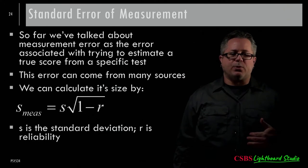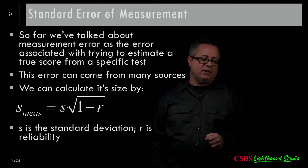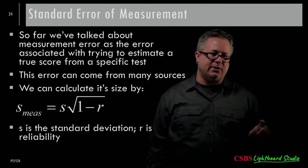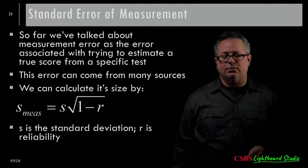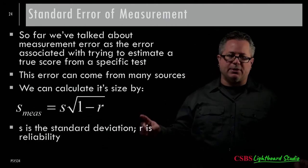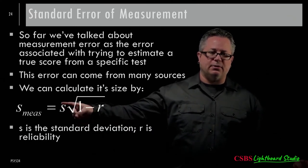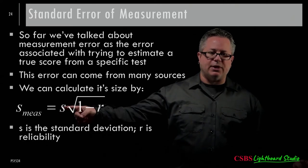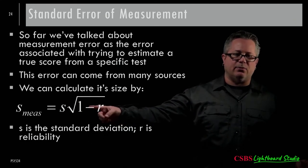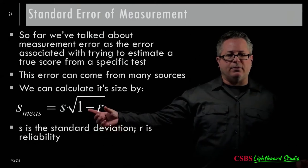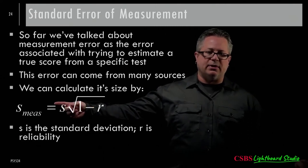We've talked about measurement error in terms of trying to estimate a true score from a specific test. Remember, x equals true score plus error. We can calculate reliability, and from that we can compute the standard error of measurement — which converts reliability into the scale's own units. The formula uses the standard deviation of the scale multiplied by the square root of one minus reliability.